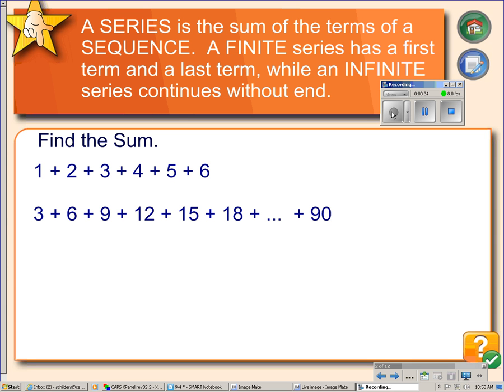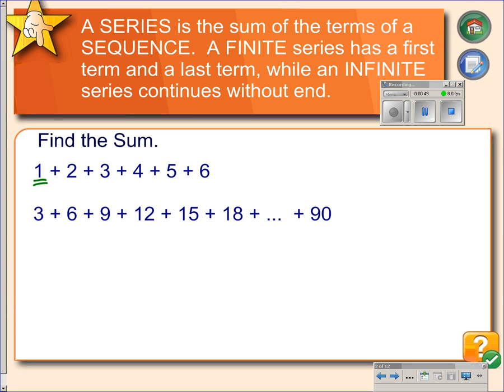A series can be finite or infinite. A finite series is one where you have a beginning and an end, a definite stopping point. So this first series is finite because we have a starting point here and an ending point here. The second series is also finite because we have a starting point at 3, and we'll end when we get to 90. But if this 90 were not here and we ended with the ellipses, then this would be an infinite series.